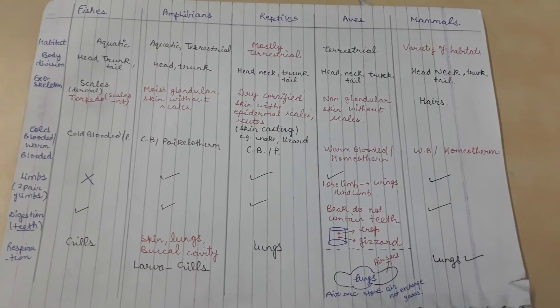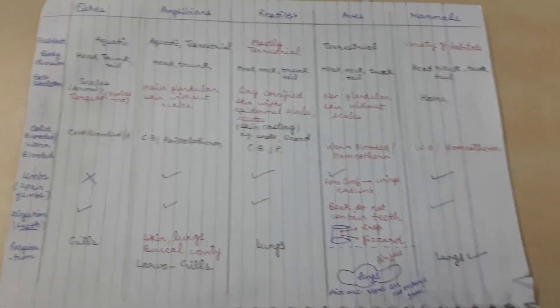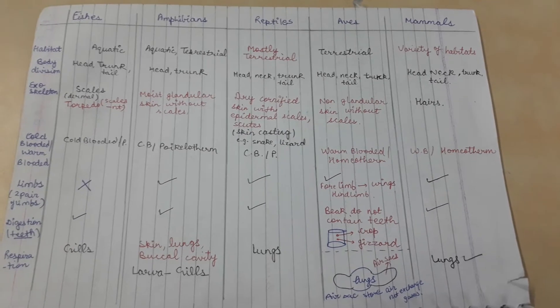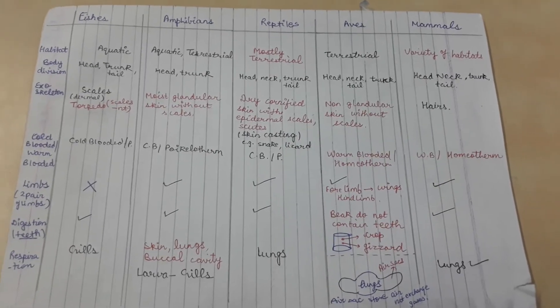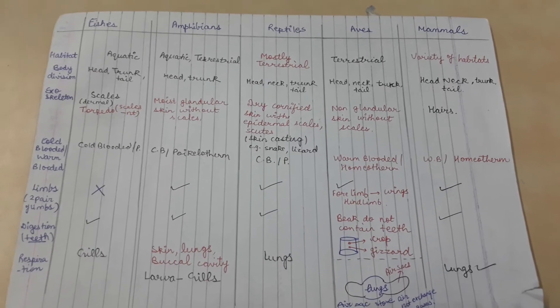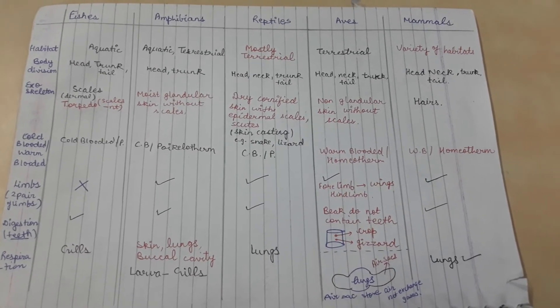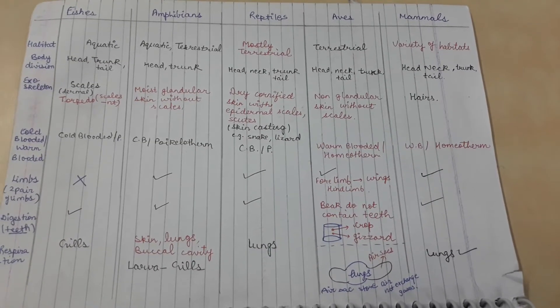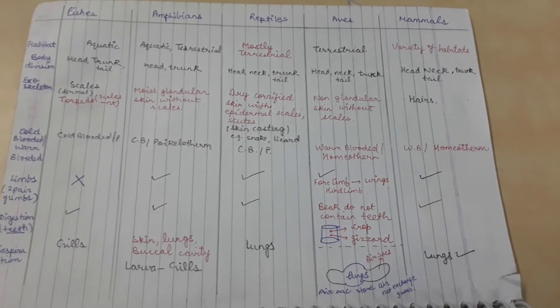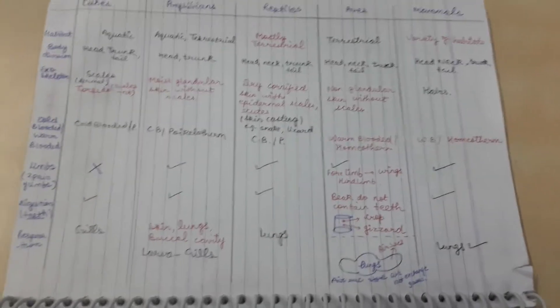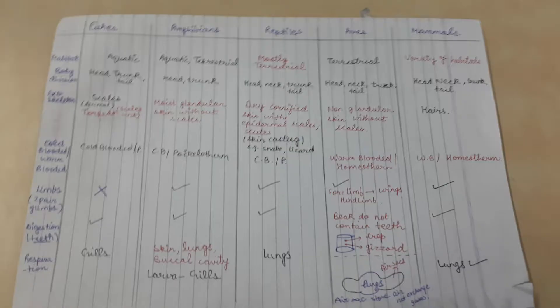Respiration: fishes respire by gills. Amphibians have skin, lungs, buccal cavity, and the larva respires by gills. Reptiles have lungs, and aves also have lungs but their lungs possess air sacs. Mammals have lungs.